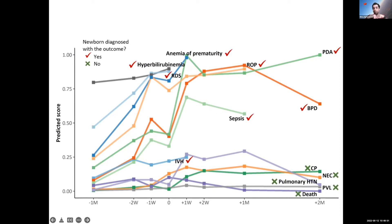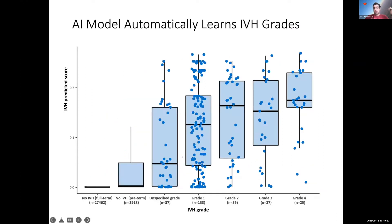Here's an example from one patient: a red check mark means a diagnosis they ended up getting, a green cross means a diagnosis they didn't get. A couple weeks before birth, we had already correctly predicted this patient would get sepsis one month after birth, as well as BPD and ROP. One case that didn't work well was IVH — our algorithm disagreed with the diagnosis, but it turned out IVH has grades, and our algorithm was automatically learning those grades.